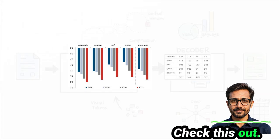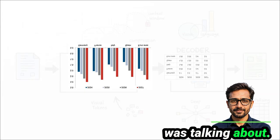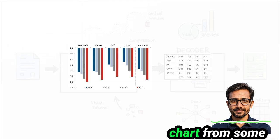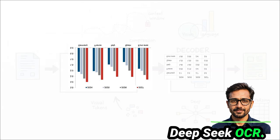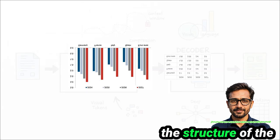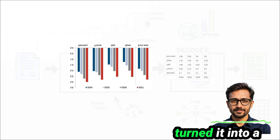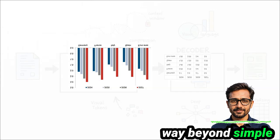And check this out. This is a perfect example of that deep parsing I was talking about. On the left, you've got this messy bar chart from some financial report. On the right is the output from DeepSeek OCR. Look at that. It didn't just read the text. It understood the structure of the chart and perfectly turned it into a clean, organized data table. That is way beyond simple text recognition.